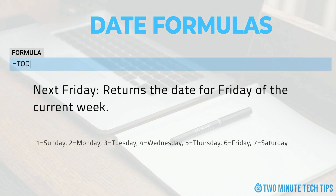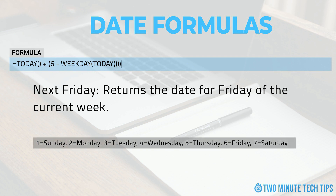Here is the formula to return the date of Friday of the current week. This formula uses a combination of the WEEKDAY and TODAY formulas. Please note, the WEEKDAY formula uses the number values listed below for each day of the week. In this example, the 6 represents Friday. We can change the 6 to a different value if we want to return a different day of the week.